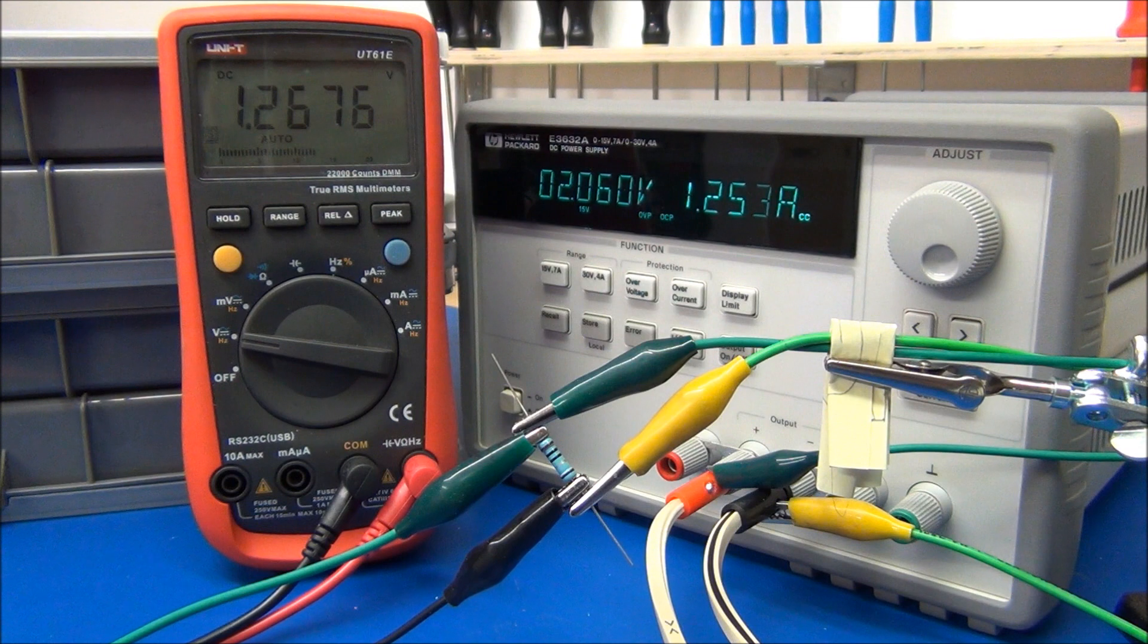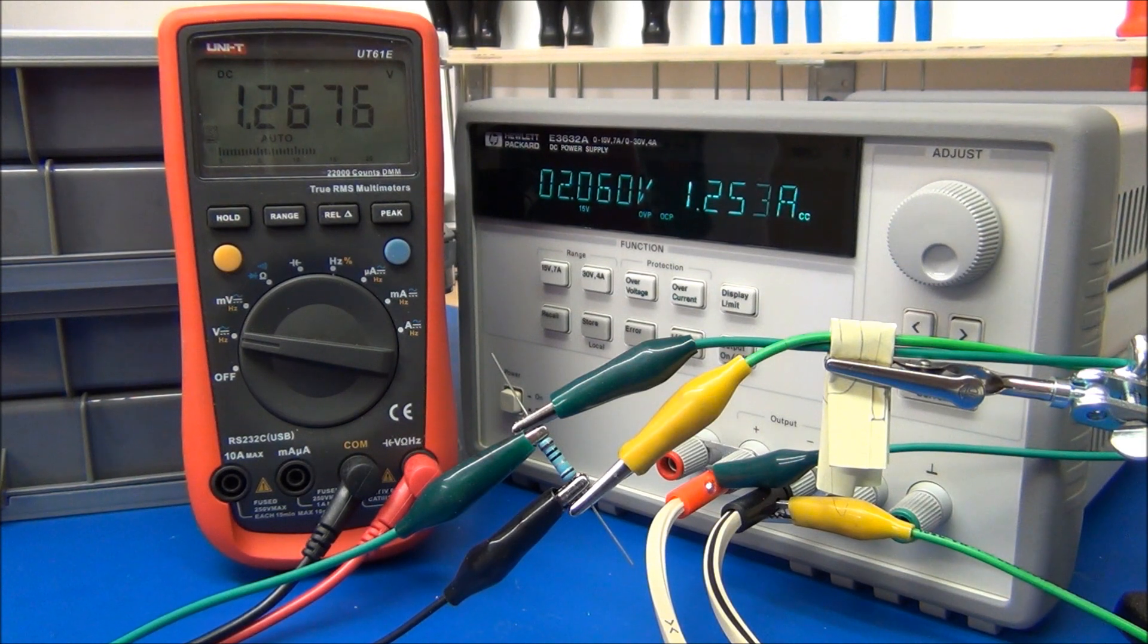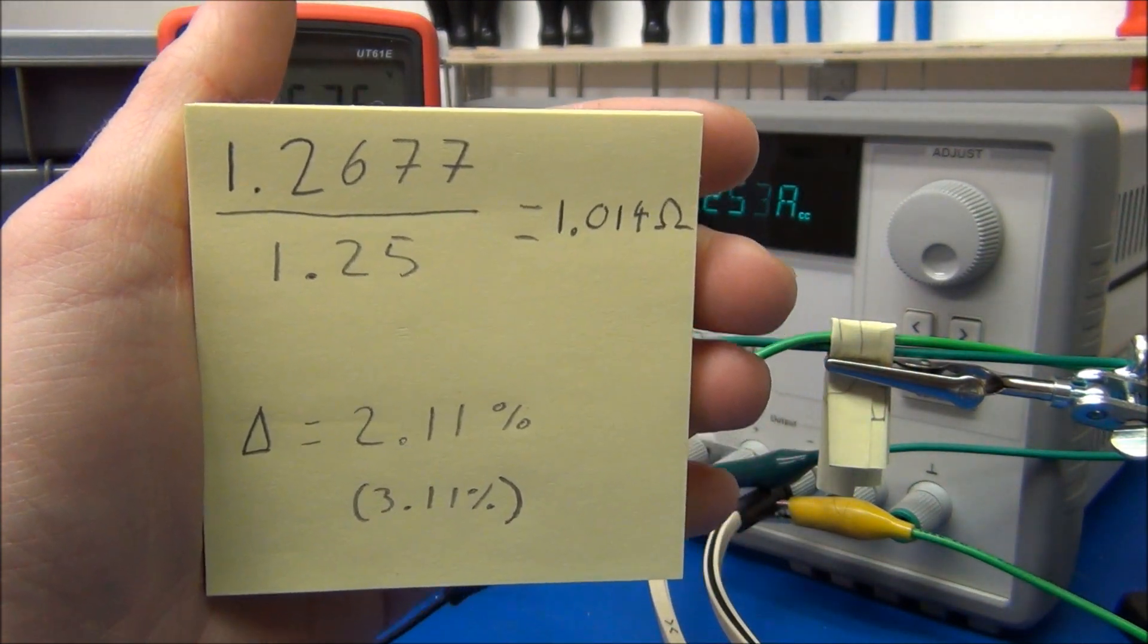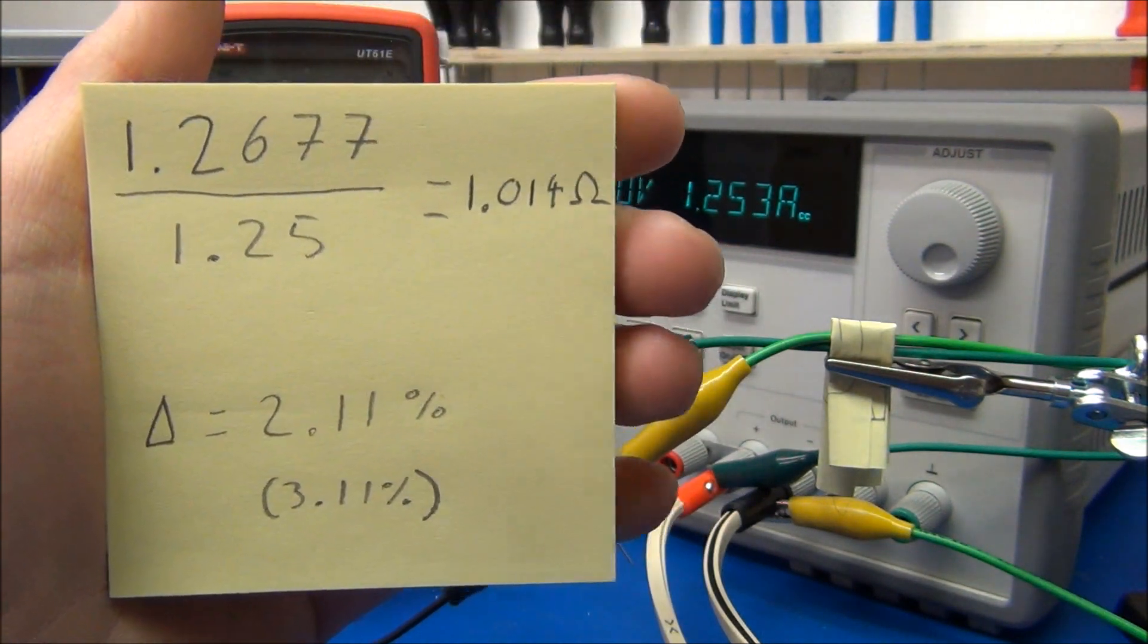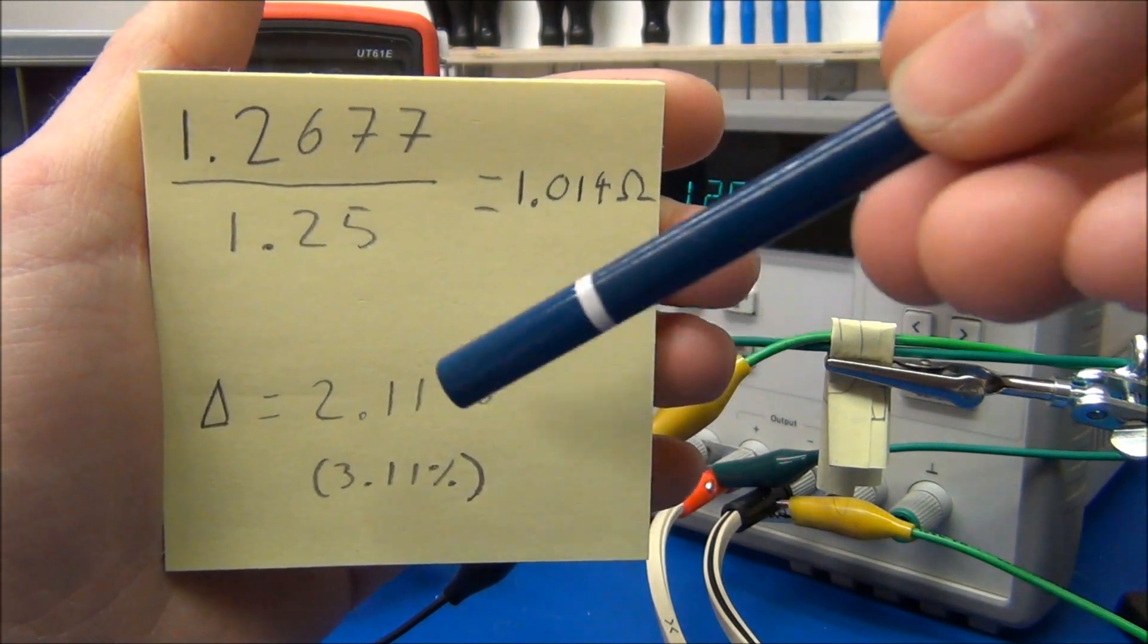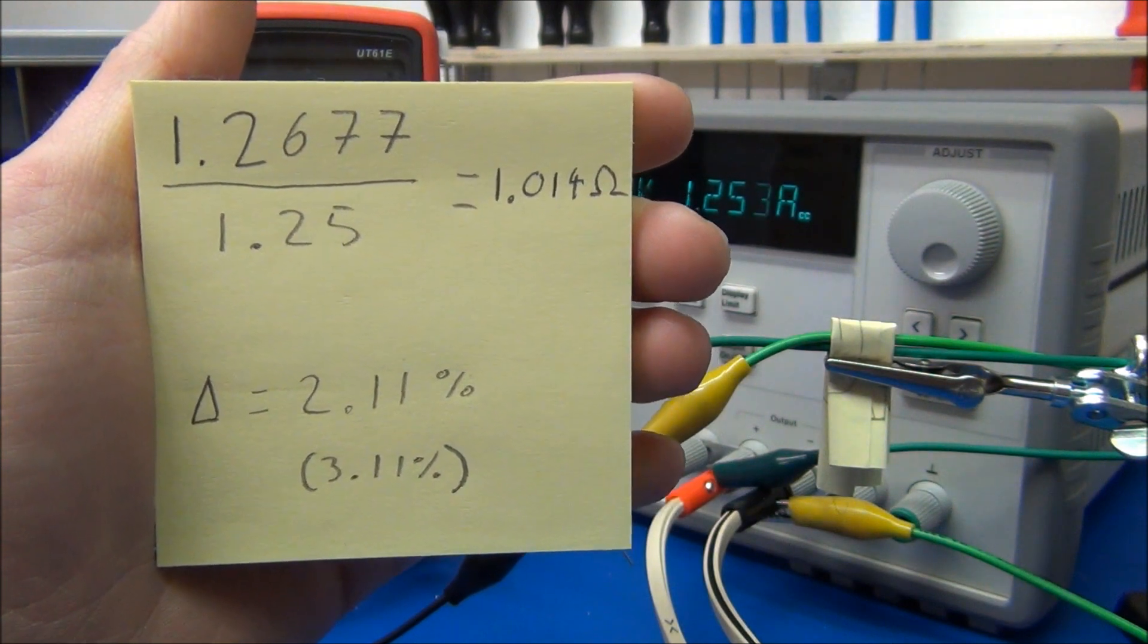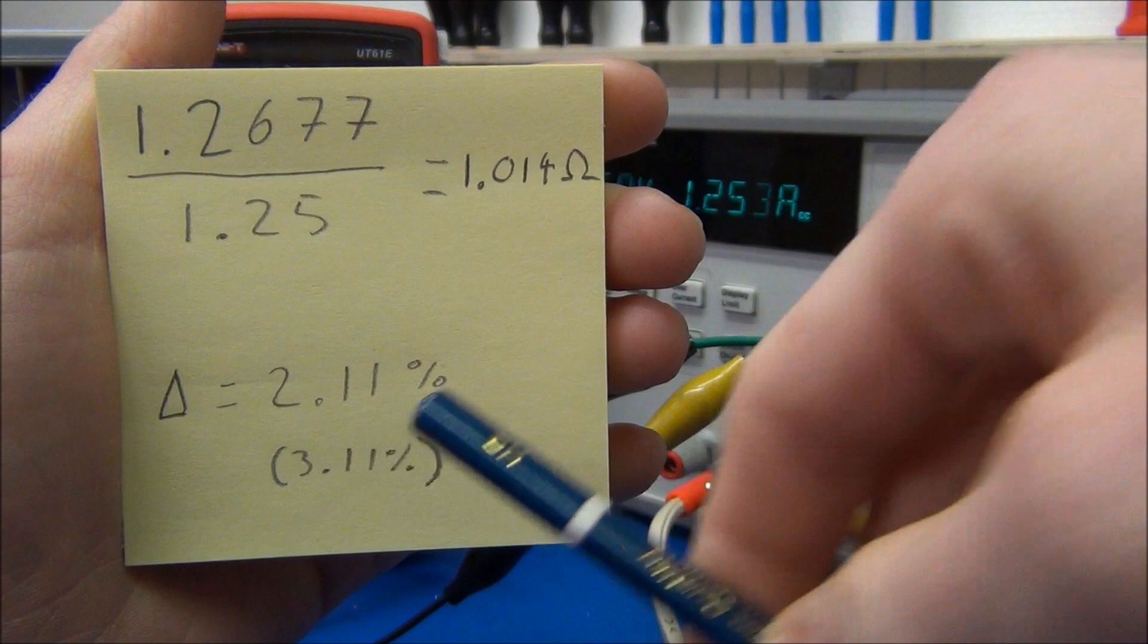So it seems to have settled around here. I've noted that at 1.2677, but it's jumping around a little. And the calculation is very easy. Again, we just take our volts divided by amps equals ohms. This is Ohm's law. Do the same calculation again, we get 2.11%. And if we add the 1% tolerance of the resistor again, we get 3.1%.